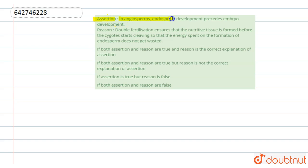Reason: Double fertilization ensures that the nutritive tissue is formed before the zygote starts cleaving, so that the energy spent on the formation of endosperm does not get wasted. And the options are given below. So the solution is: